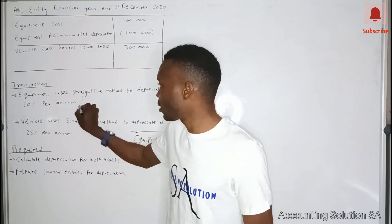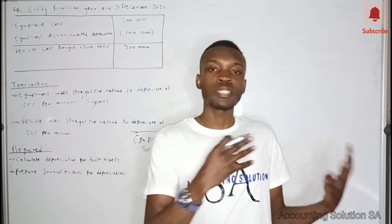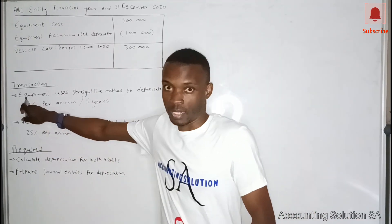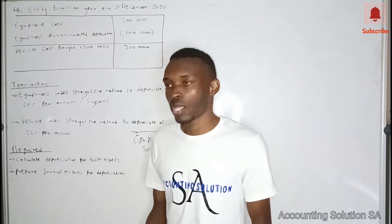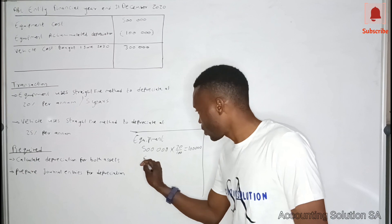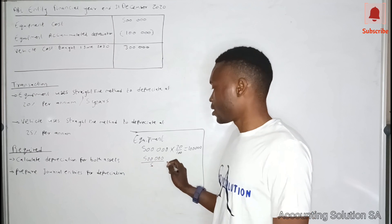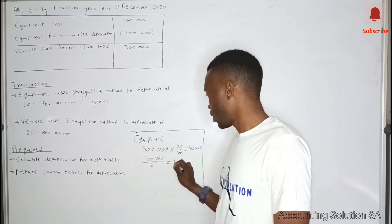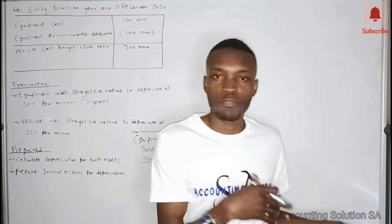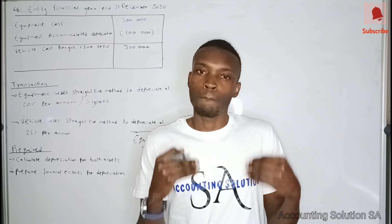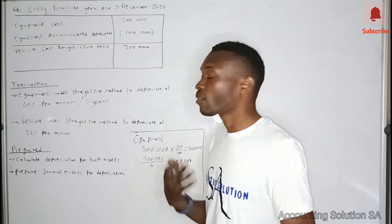In some situations, instead of a percentage they may give you a useful life in years. If they say five years, that is the same as 20 percent. If they say four years, that is the same as 25 percent. So 500,000 divided by five years also gives you 100,000 — the same answer. Whether they give you years or a percentage, divide by years or multiply by the percentage over 100 to get the same result.